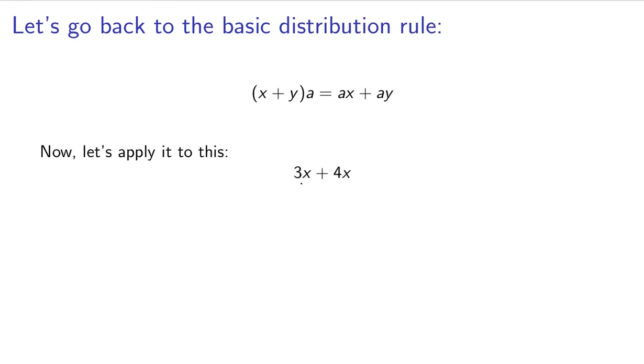And let's apply it to this: 3x plus 4x. Now, this 3x plus 4x has this x as a common factor. So when we have 3x plus 4x, that's the same thing as (3 + 4)x. I just went in the reverse for the basic distribution rule. I factored out that x.